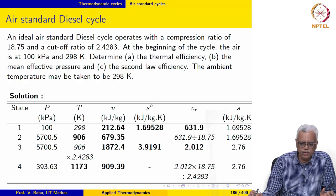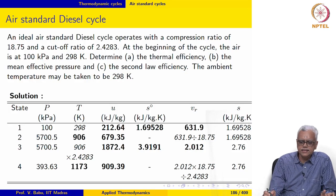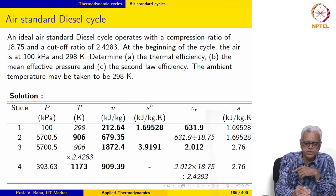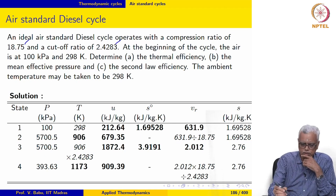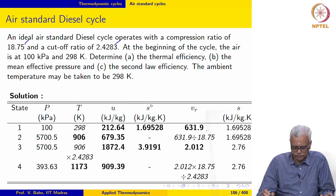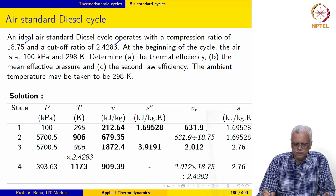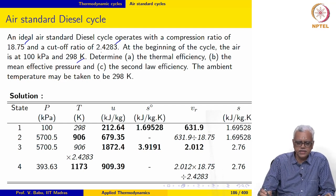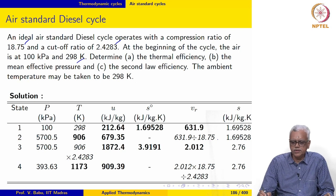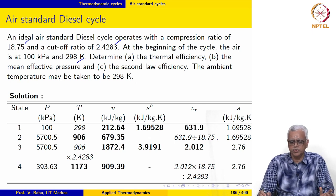Let us work out an example. An ideal air standard diesel cycle operates with a compression ratio of 18.75 and a cutoff ratio of 2.4283. The temperature and pressure at the beginning state 1 are given. We are asked to determine thermal efficiency, mean effective pressure, and the second law efficiency.